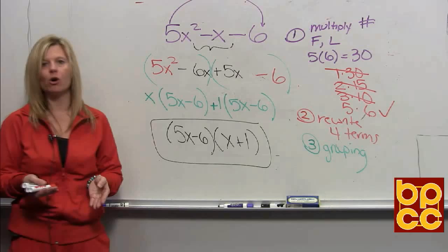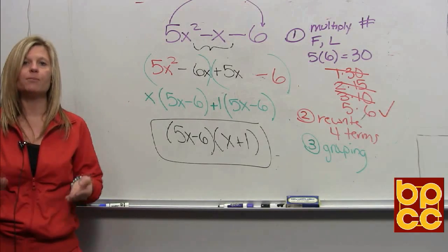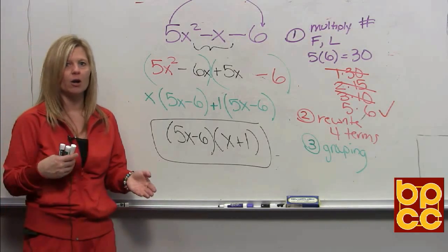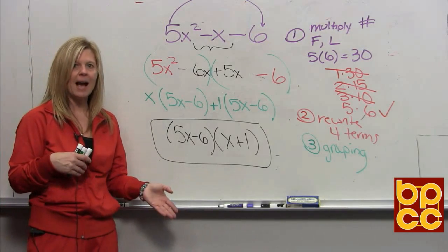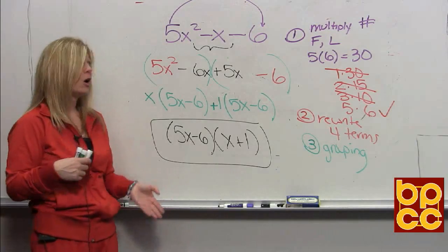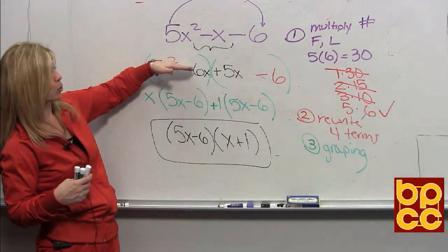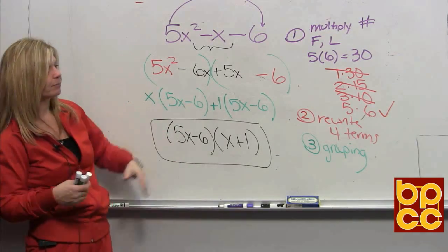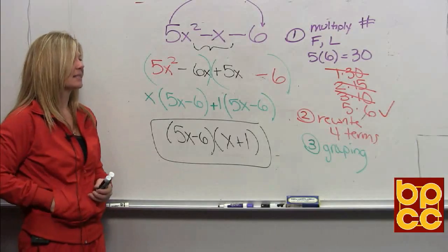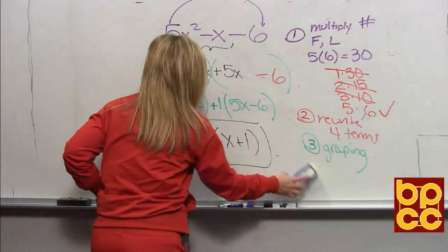So when you're factoring a difficult trinomial, it's up to you which method you prefer — thinking backwards using FOIL, or doing a standard grouping. Let's try one more in the class notes.